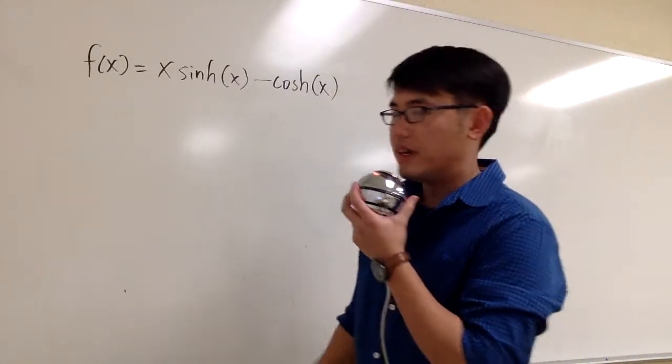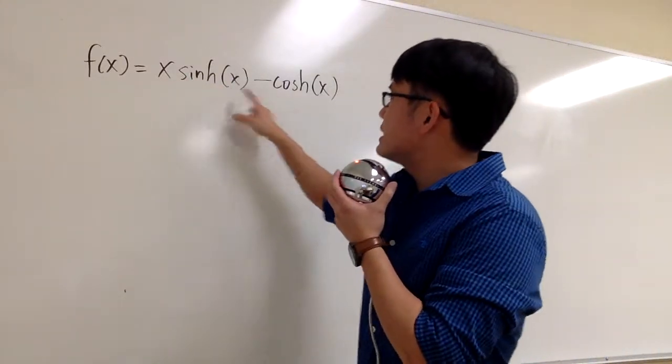We are going to find the derivative of this function, x times sinh x minus cosh x.